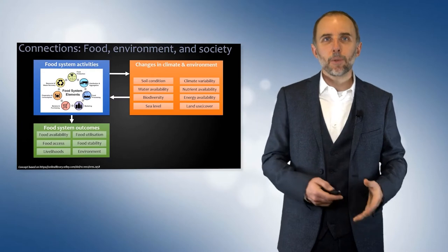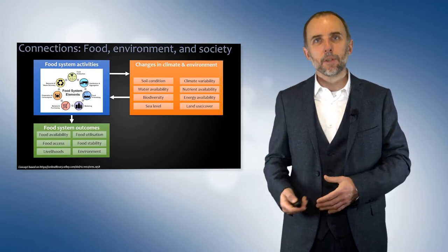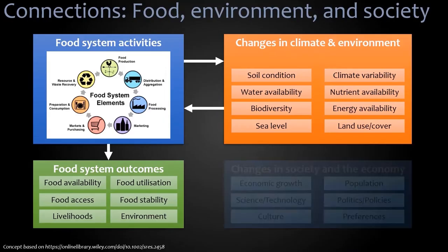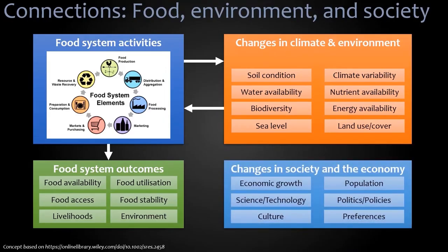So those are some of the connections between our food systems, our climate and the environment. But there are also connections between society and the economy. They influence climate and environment, they influence our food systems, and so on. So let's look at some of the changes in society and the economy that are linked to our food systems as well.